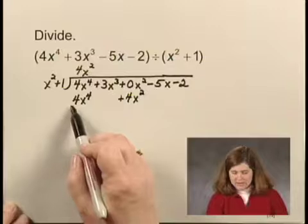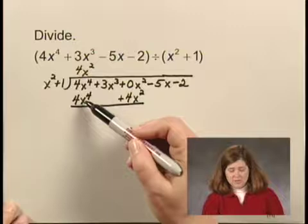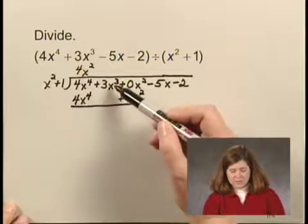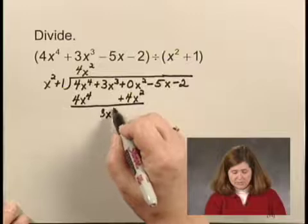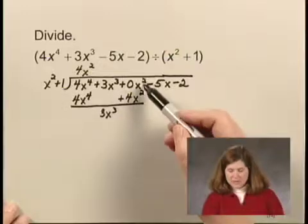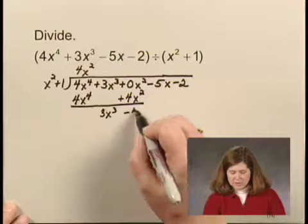And now I can subtract. 4x^4 - 4x^4 is 0. 3x^3 - 0 is 3x^3. 0x^2 - 4x^2 is -4x^2.